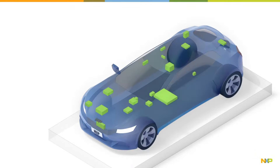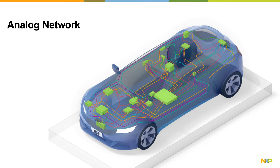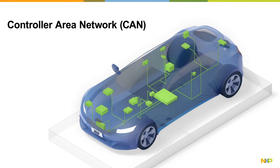In the past, the nodes were connected by dedicated analog signal wires, which was architecturally complex and costly. In 1986, the controller area network, or CAN, was standardized, allowing in-vehicle nodes to communicate via multiplex wiring rather than dedicated ones.